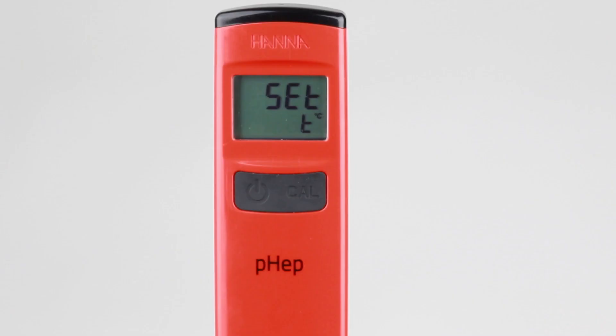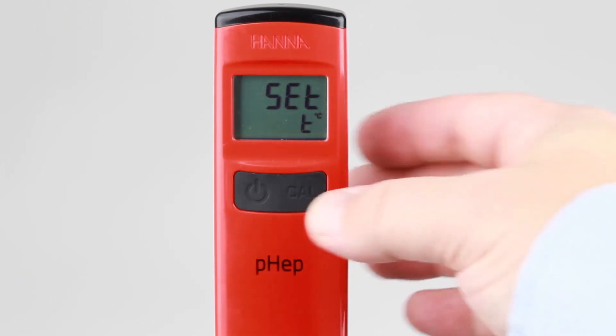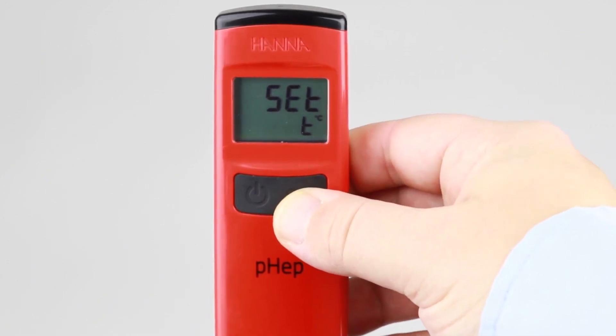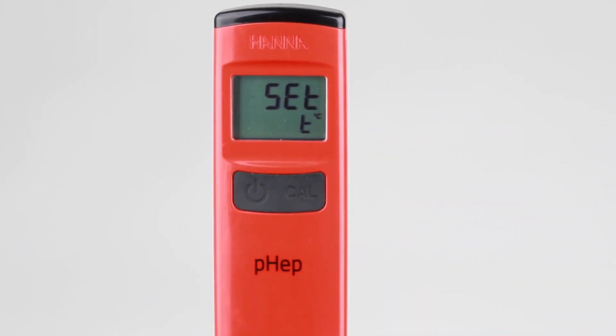The first setting displayed is a selection for temperature unit. At default, the temperature measurement unit is degrees Celsius. Pressing the CAL button changes the displayed unit to degrees Fahrenheit. Pressing the CAL button again changes it back to degrees Celsius.